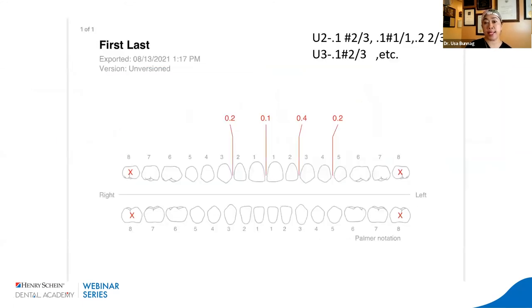Archform provides an IPR chart when you do the design, showing which teeth need interproximal reduction and the amount required.